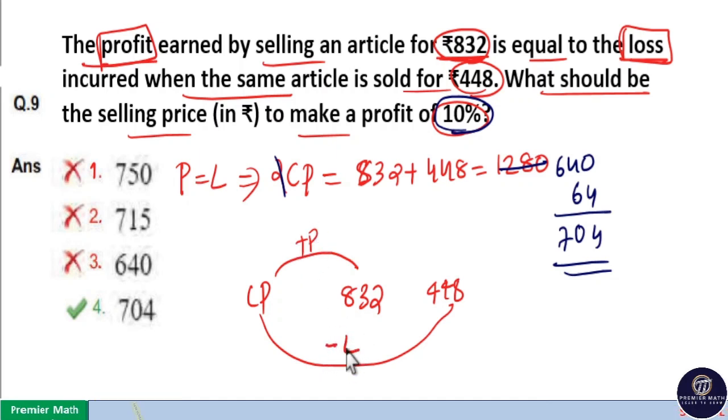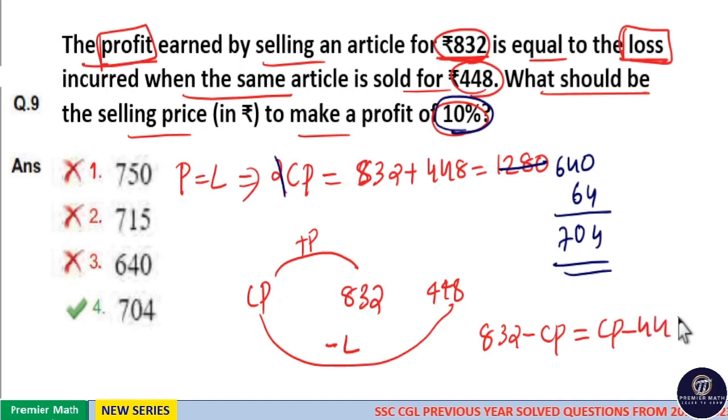Here profit equals loss, which means sell price minus cost price is profit. That is 832 minus CP is profit. Loss equals cost price minus sell price, that is CP minus 448.